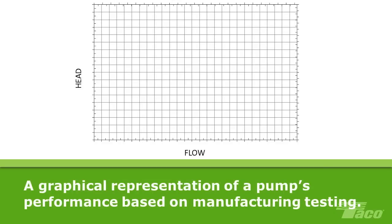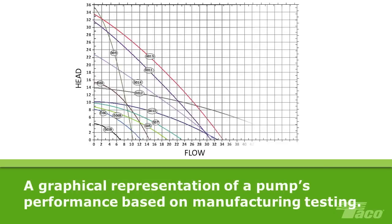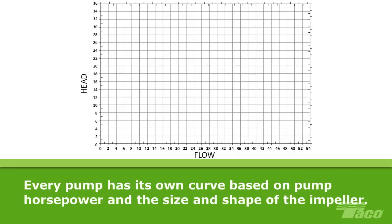A pump performance curve, usually just called a pump curve, is a graphical representation of the performance of a pump based on testing by the pump manufacturer. Every pump has its own curve, and those curves vary widely from pump to pump. The variations depend on many factors, such as the horsepower of the pump and the size and shape of the impeller.